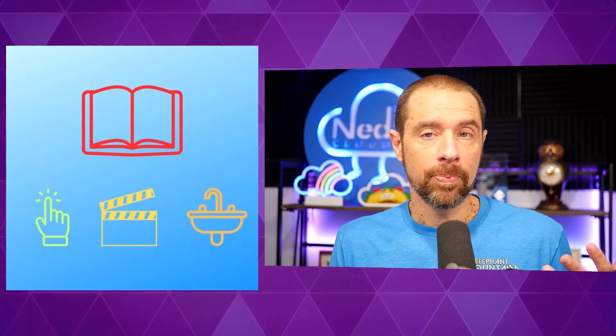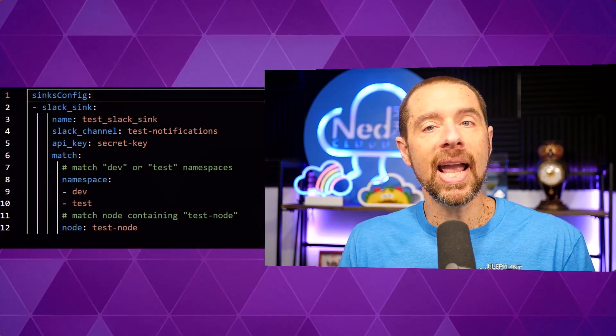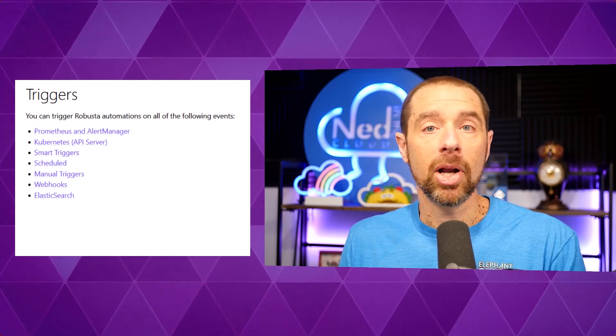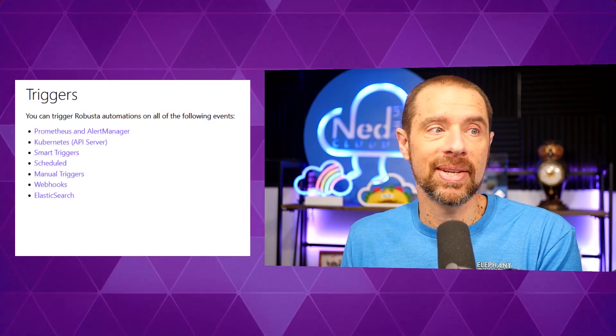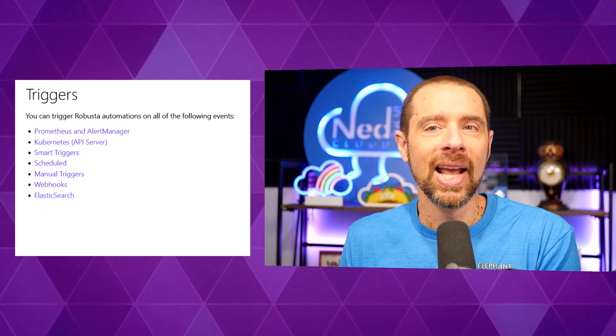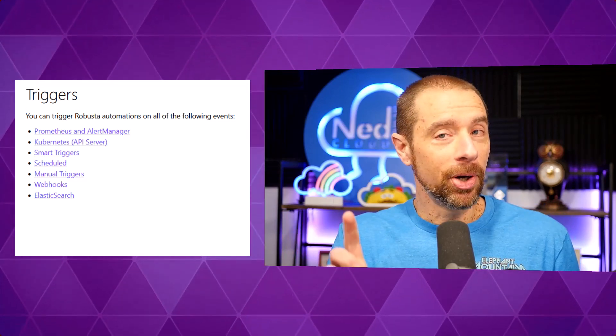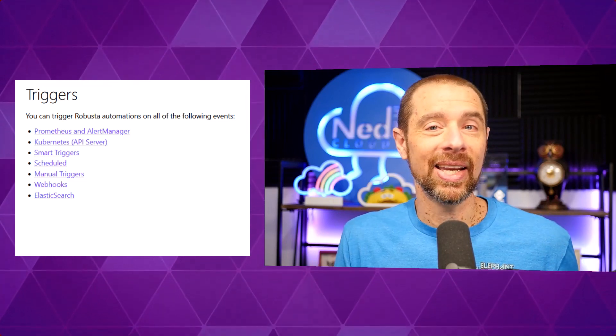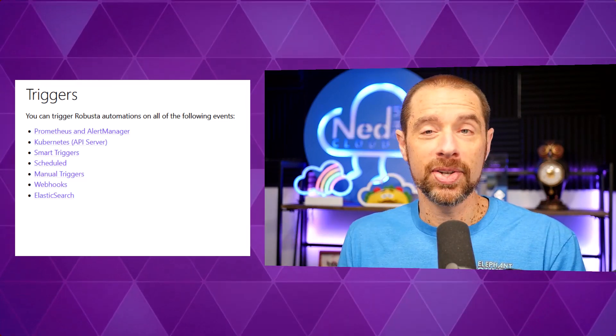The open source version of Robusta includes built-in rules, but it's more than just sending an alert with some info. There's a sneaky automation engine under the hood — okay, it's not that sneaky, but hear me out. The rules are housed in Robusta playbooks, and they're composed of a trigger, an action, and a sink. The trigger determines when the rule is fired. You can trigger on events from the Kubernetes API server, from Prometheus, from Alert Manager, on a scheduled trigger that runs at the same time every day or once a week, or on webhooks — which means you can trigger on just about anything, including your own custom events.